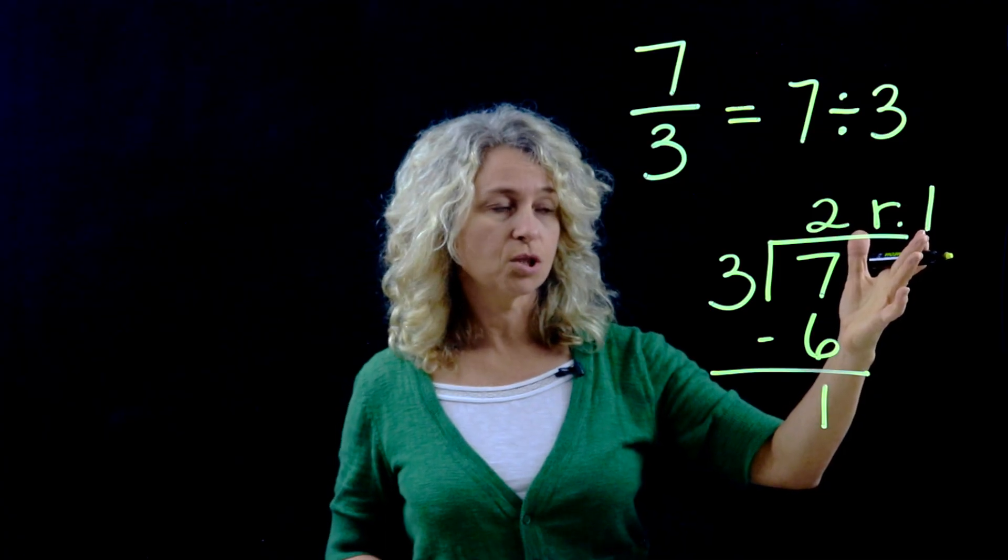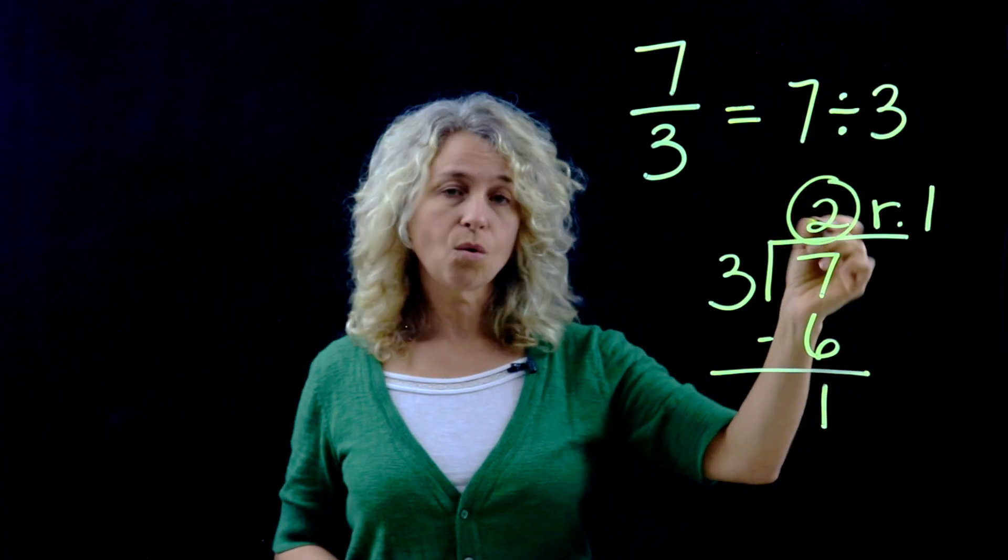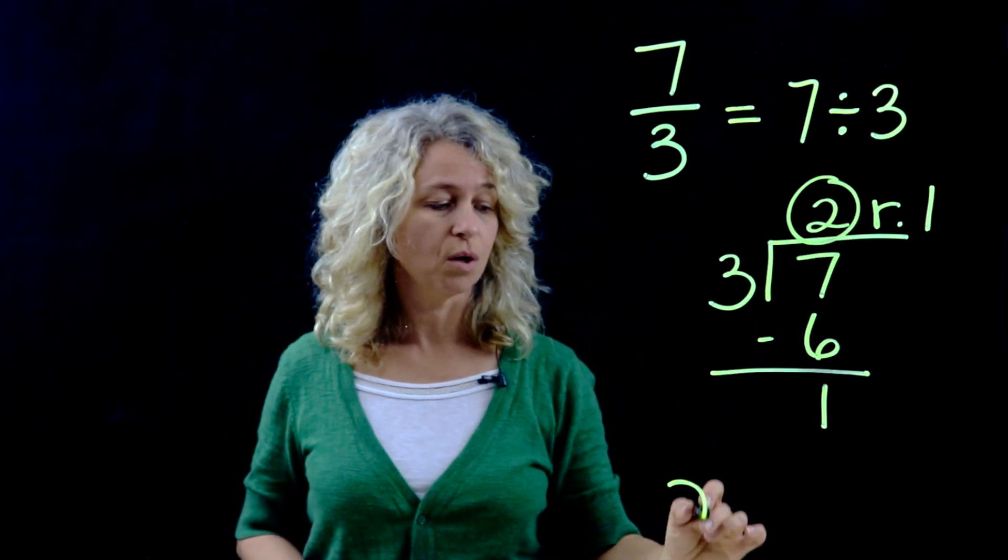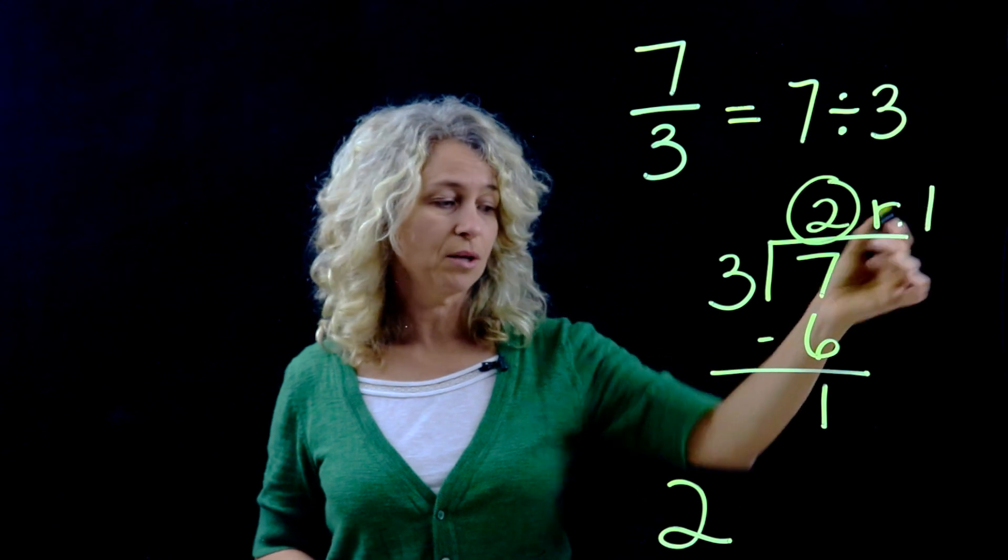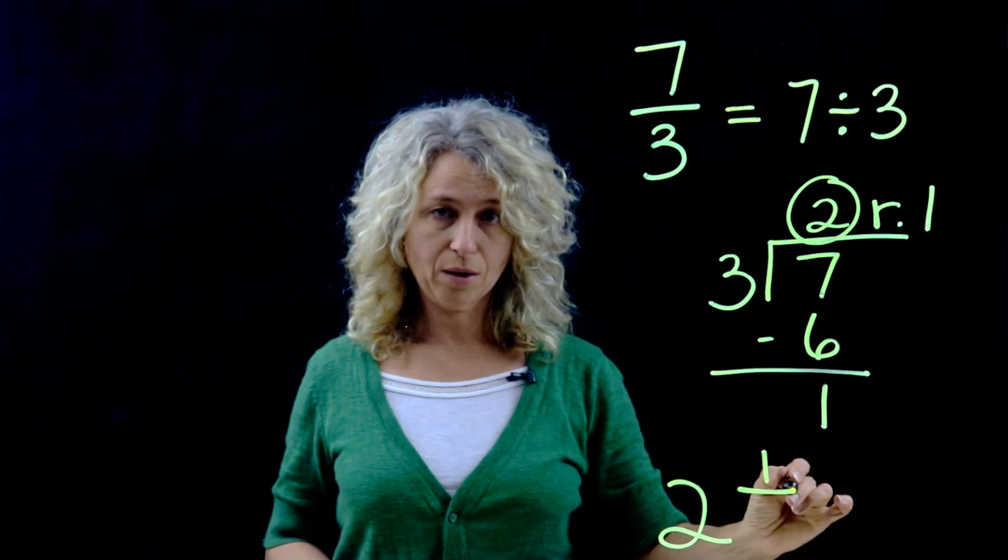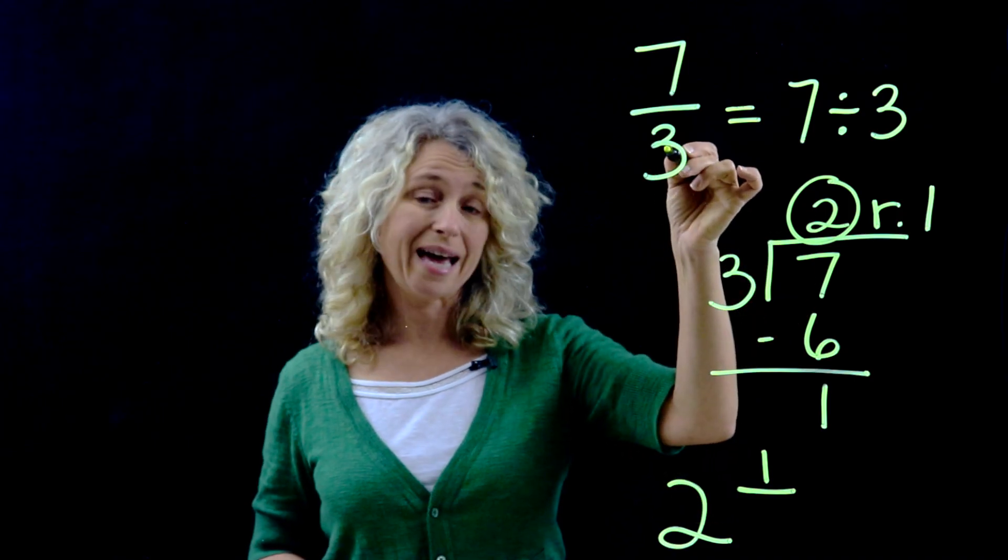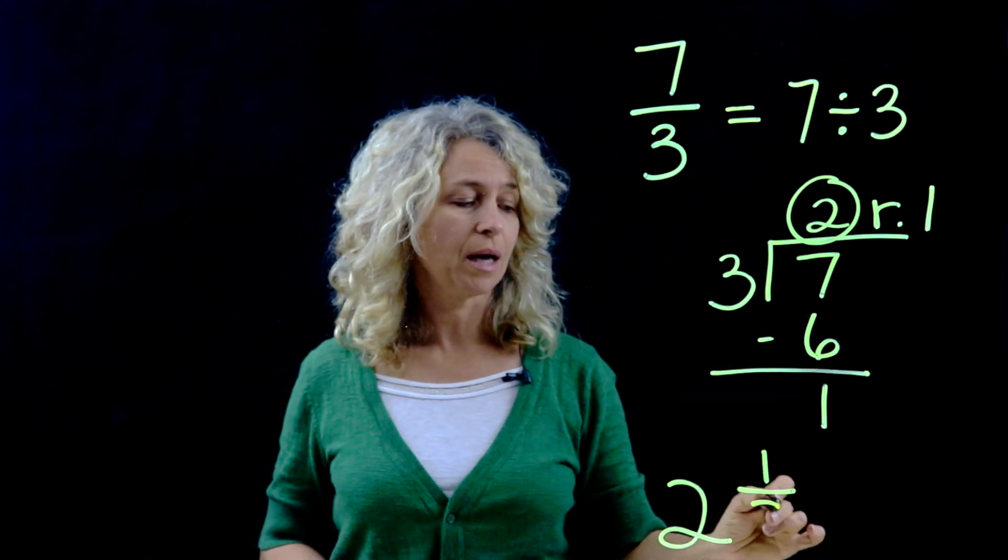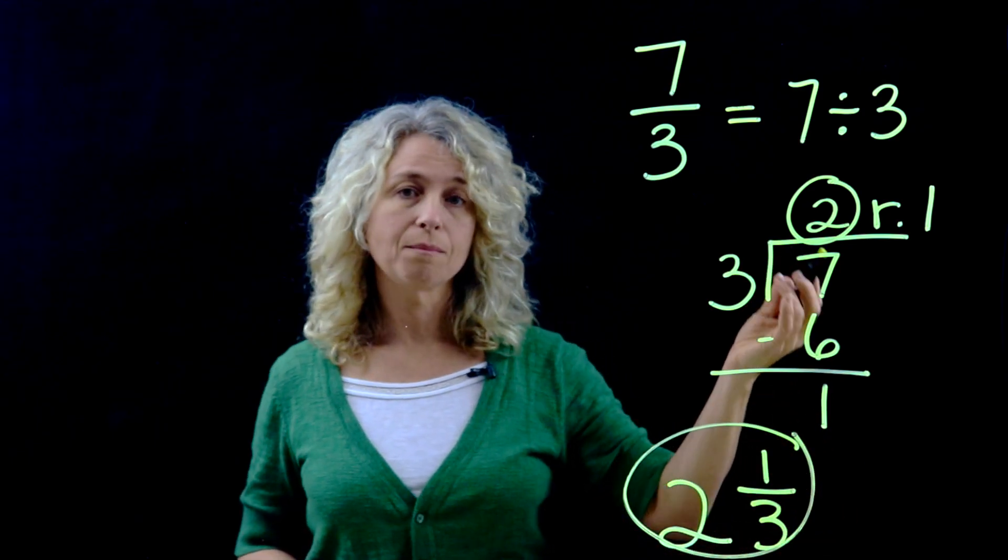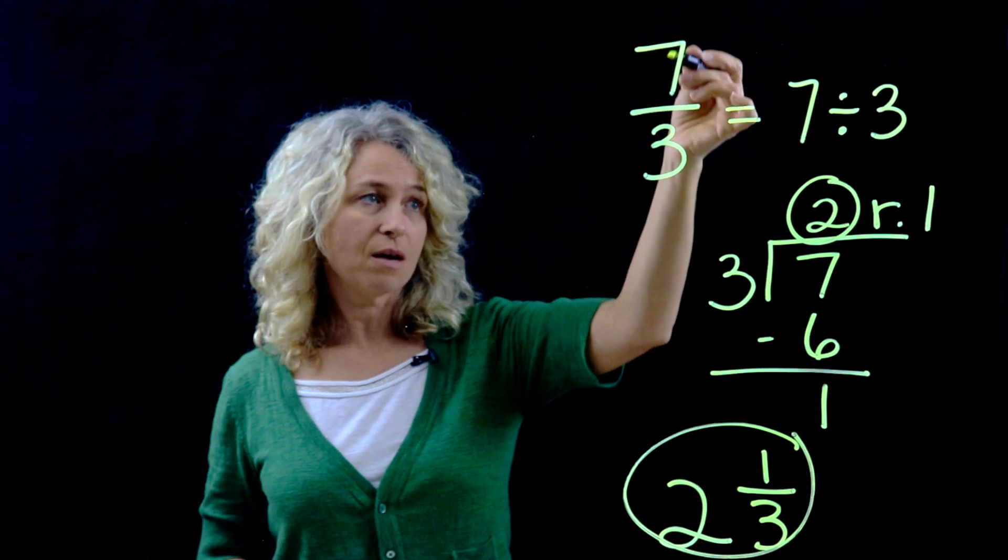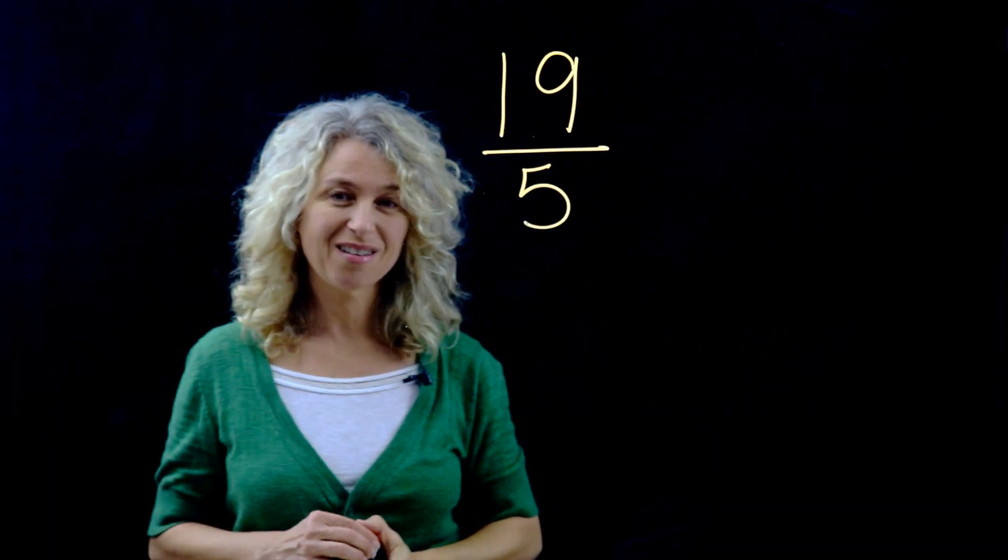For the mixed number, so this is very key to remember: your quotient of 2 is your whole number, and the 1, which is your remainder, becomes the numerator. Your denominator is your divisor, which is the same as the denominator. So 2 and 1/3 is your mixed number. So 7/3 equals 2 and 1/3.